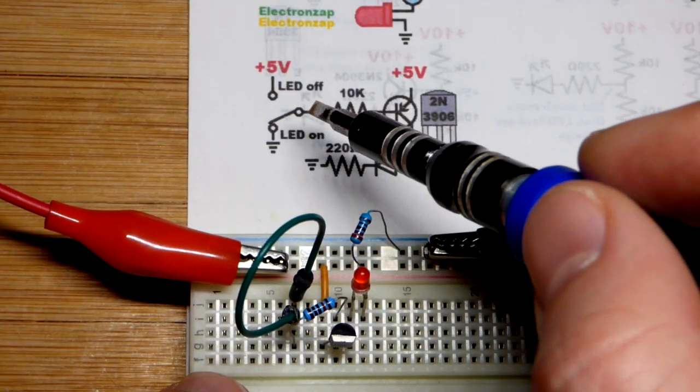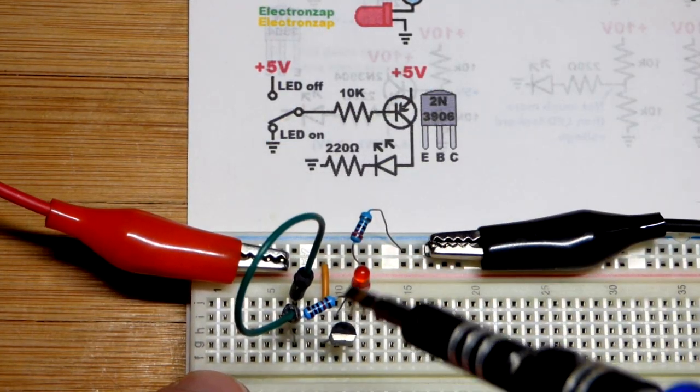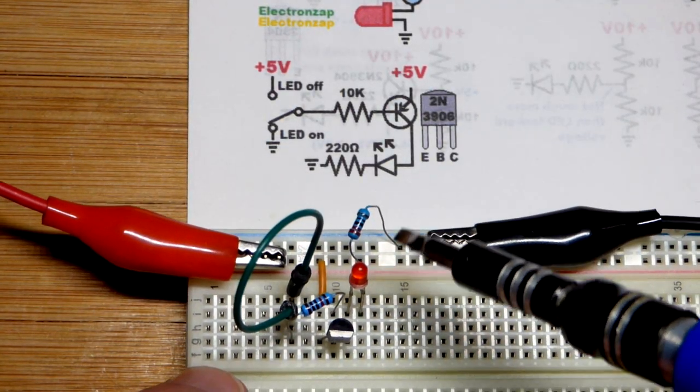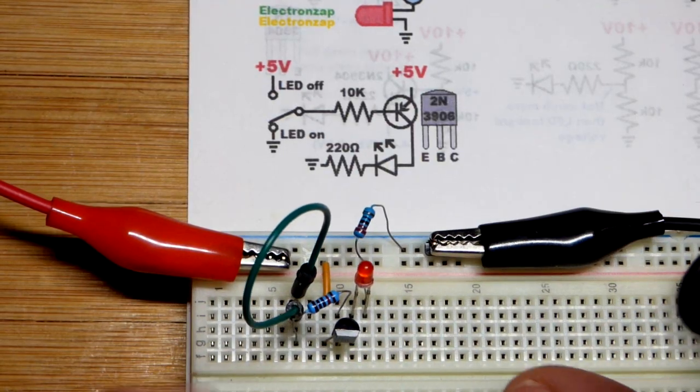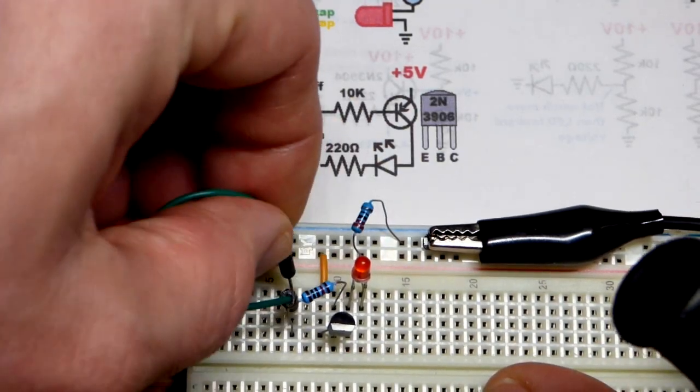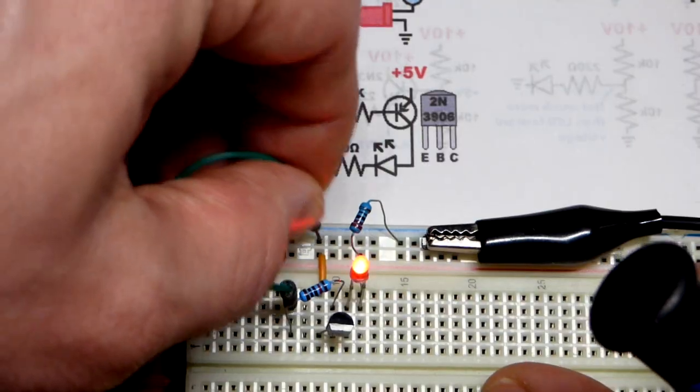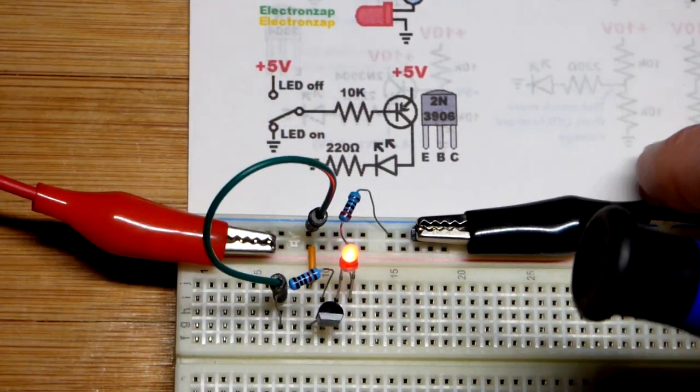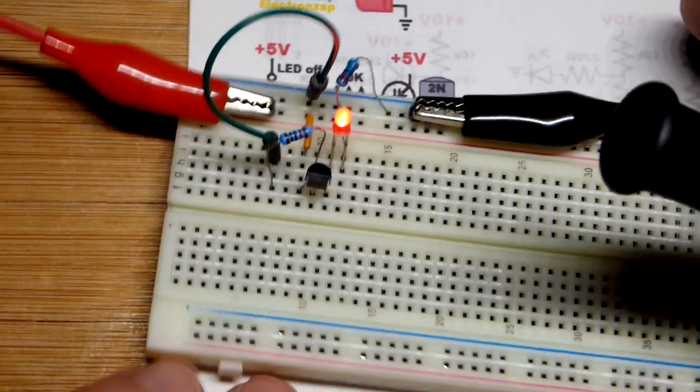We need a little bit of emitter to base current in order to turn the LED on. At this moment, we don't have that because the jumper is just floating there. If I put it to the negative supply, then we will have that set up right there. The LED is lit.